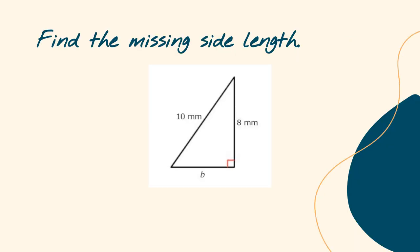For the first problem, we need to find the missing side length. I have B that I do not know. I have two other measures, and one of them is A and one of them is C. Which one would C be? 10, because that's the longest side length, which would then make 8 equal to A. So, with A equals 8, B unknown, and C equals 10, I'm going to plug what I know into the Pythagorean theorem.